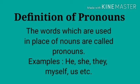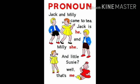Now let's see what Pronouns are. The words which are used in place of Nouns are called Pronouns. For example: he, she, they, myself, us, etc. Apart from this, there are many types of Pronouns which we use in our everyday life. For example, Jack and Millie came to tea — here Jack is 'he' and Millie is 'she', male and female.